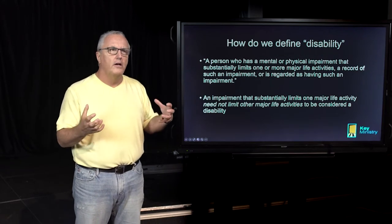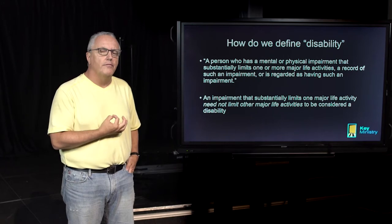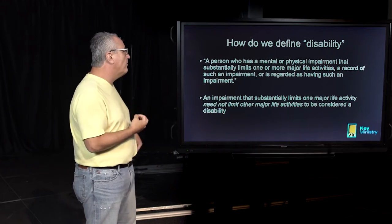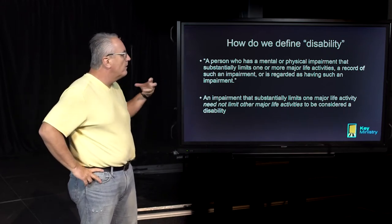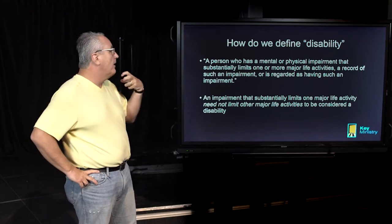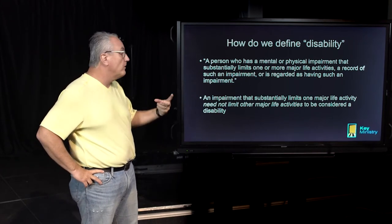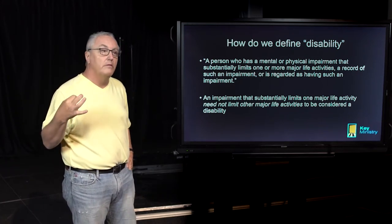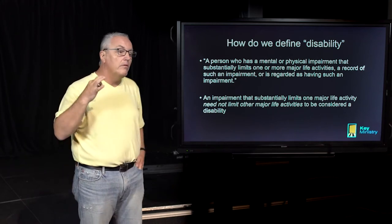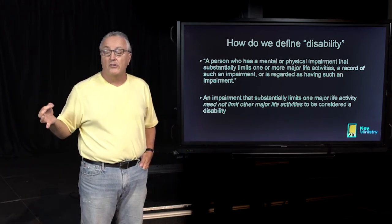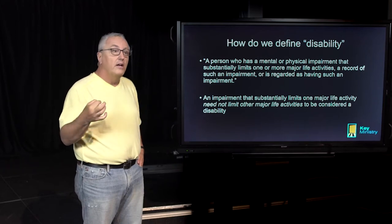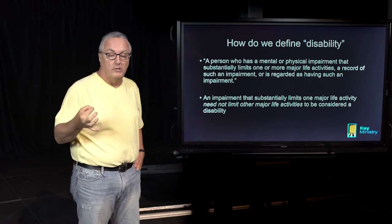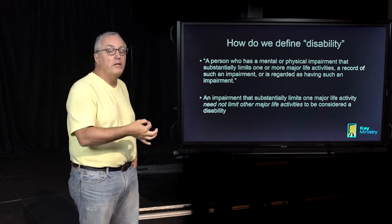Maybe we ought to start out by talking about some definitions and how we define disability. The definition in the federal register is that a person who has had a mental or physical impairment that substantially limits one or more major life activities is considered to have a disability. One important thing to understand is that one can have impairment in only one major life activity and still be considered disabled.